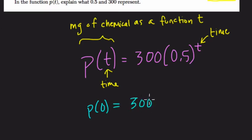0 is a great place to start with these kind of functions to see what's happening. So we get 300 times 0.5 to the 0 power. Now, what's really important here is to understand what the 0 power represents. Anything to the 0 power, except for 0, which is a special case, anything to the 0 power is 1.